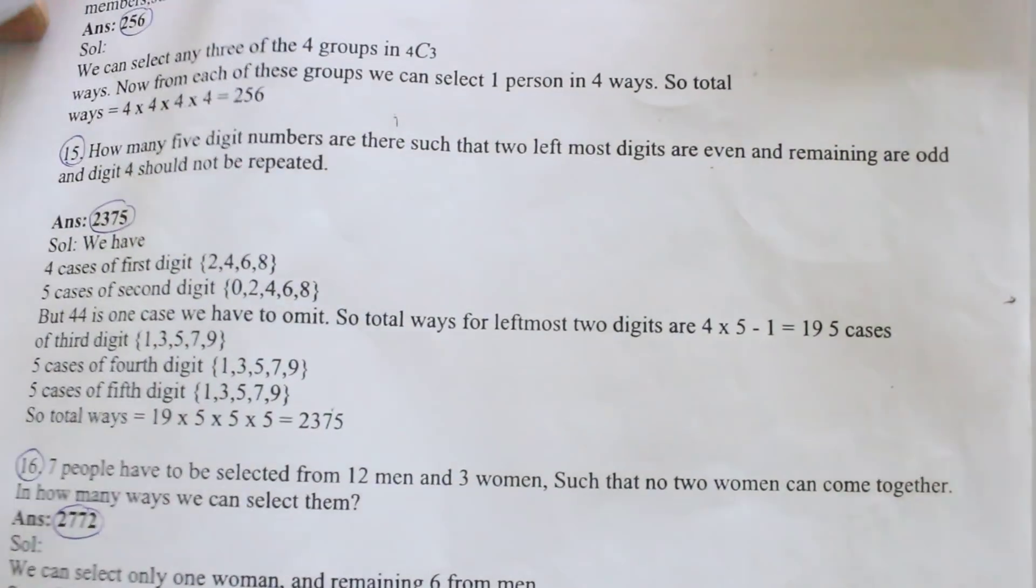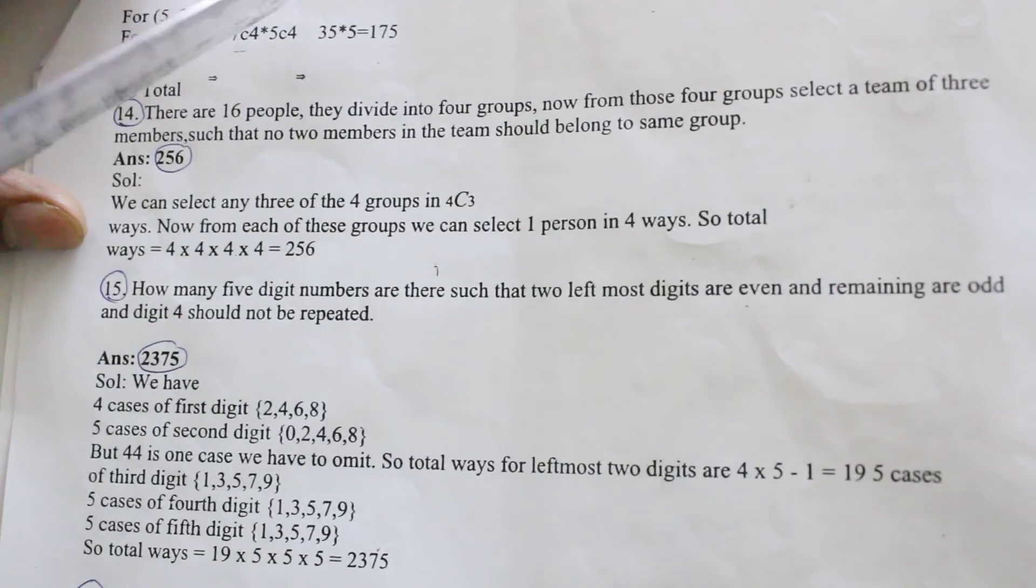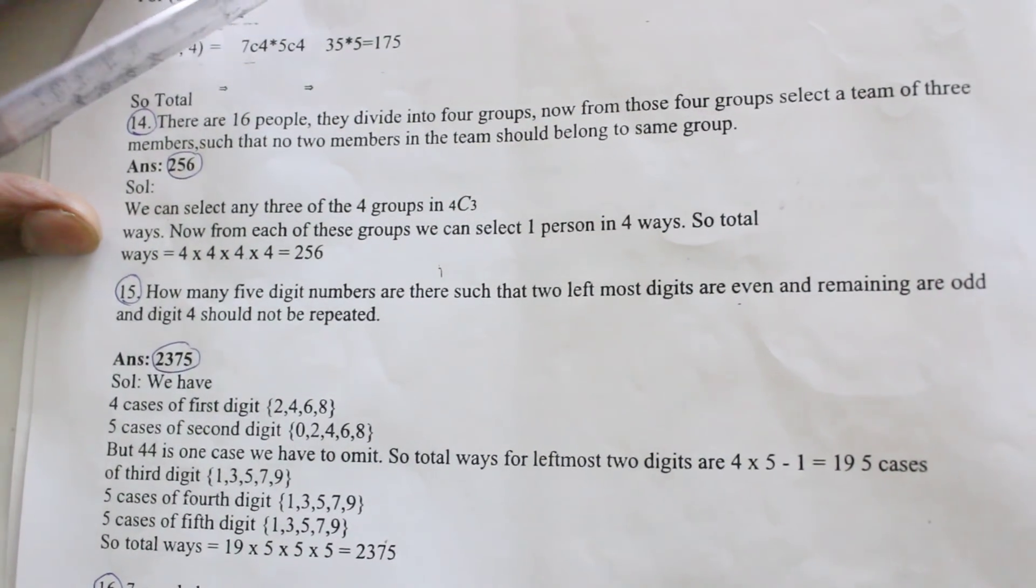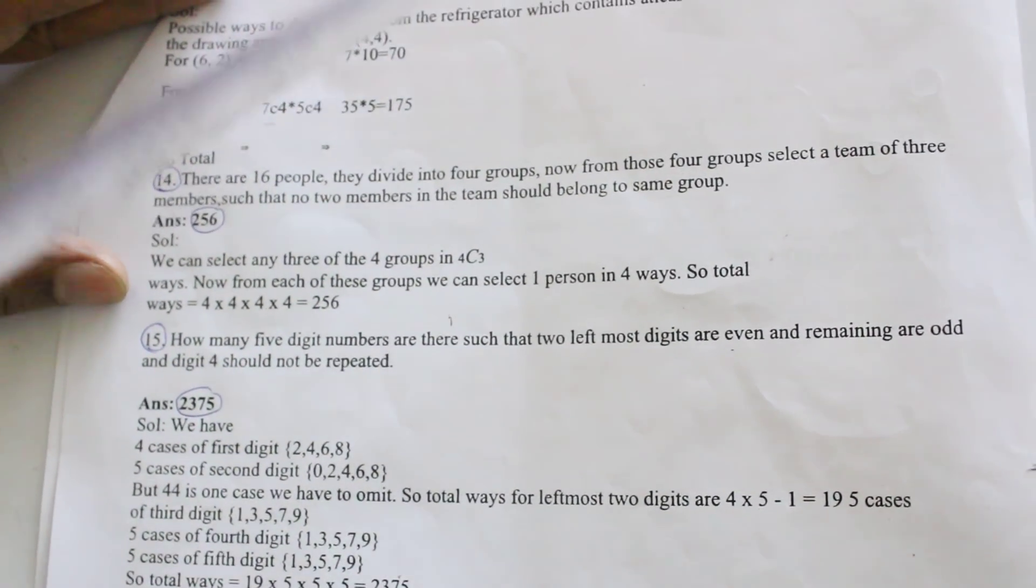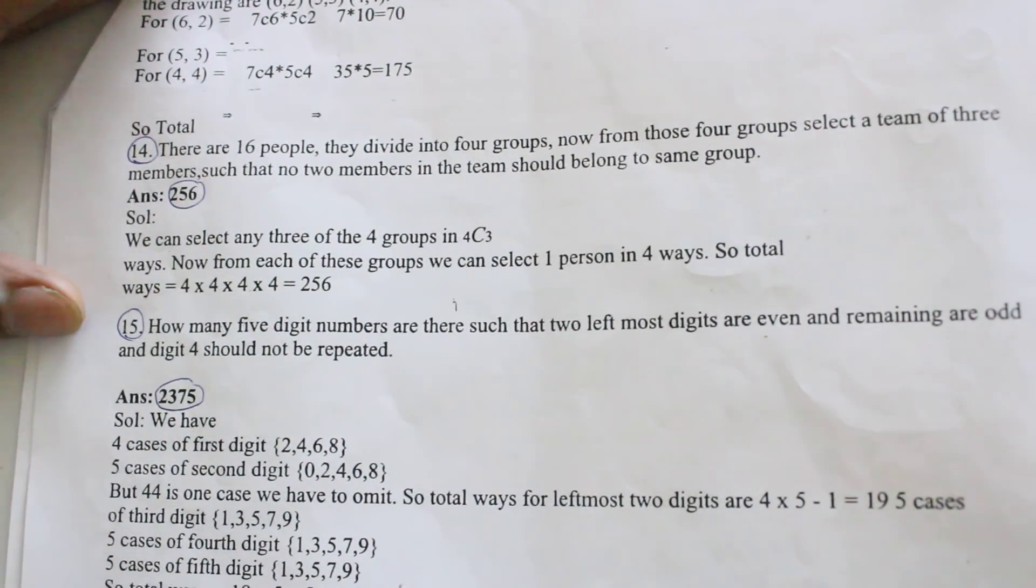14th one, this all cases counted. The total sum will be counted. 7C6 into 5C2 that equaled 7C4 into 5C4. Like this count this one.